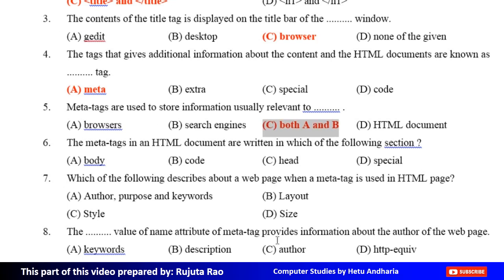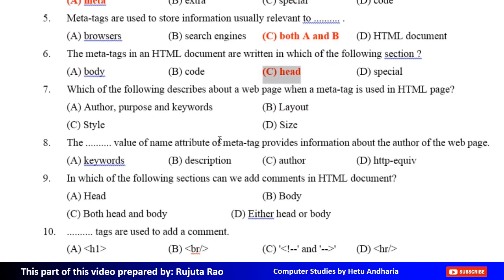Sixth MCQ: The meta tags in an HTML document are written in which of the following sections? Option A: Body, Option B: Code, Option C: Head, Option D: Special. The correct answer is Option C, Head. Seventh MCQ: Which of the following describes about a web page when a meta tag is used in an HTML page? Option A: Author, Purpose and Keywords, Option B: Layout, Option C: Style, Option D: Size. The correct answer is Option A, Author, Purpose and Keywords.